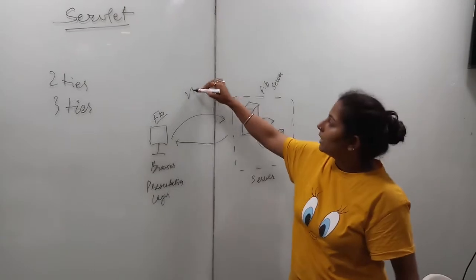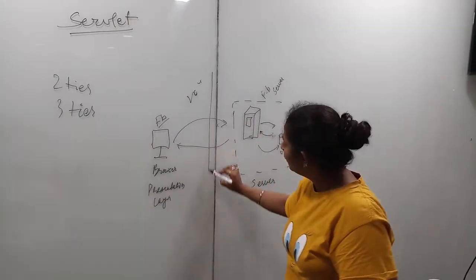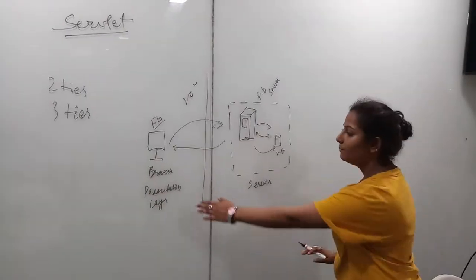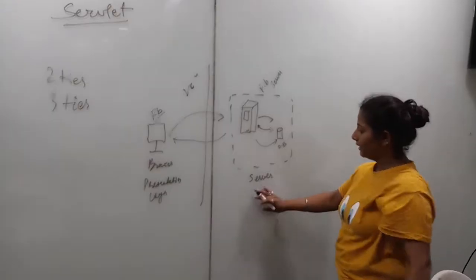So this is called two-tier architecture because we have only two layers inside it: the presentation layer and the server layer.